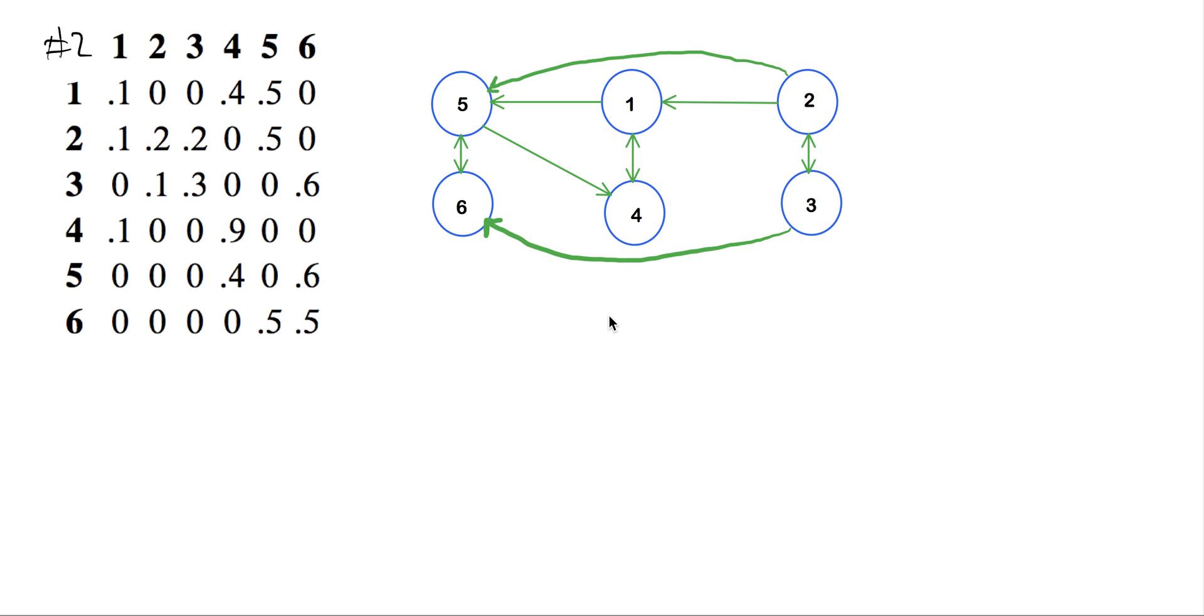This is the second part of the video on transients and recurrence and irreducibly closed sets within Markov chains. If you didn't get a chance to see the first part, I'm not going to go back over the definitions, but I suggest you look at that video. I'll put a link below so you can click on that. I advise watching that one first before watching this one.